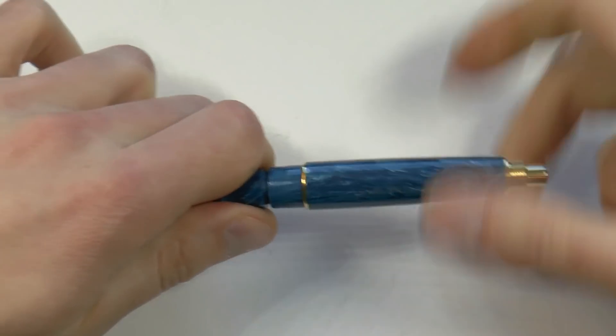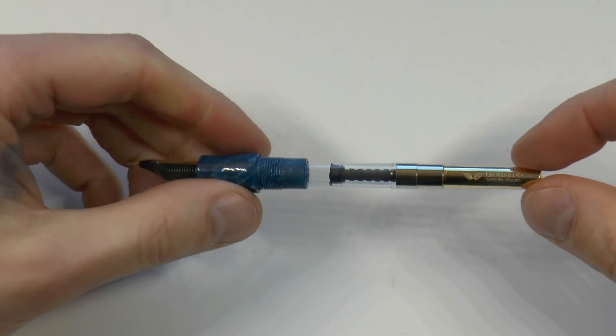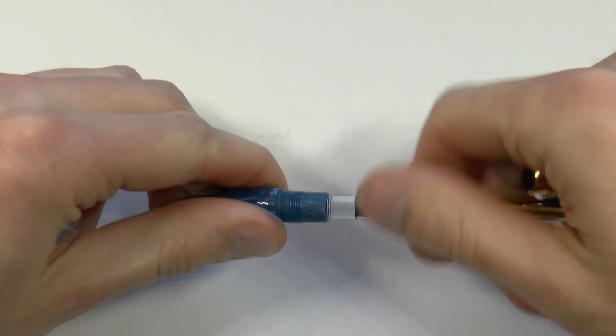There's not really a piston, is it? Because once you unscrew this, what do you got? It's a little converter, wee little converter right there. What do you do with it? You screw it out.